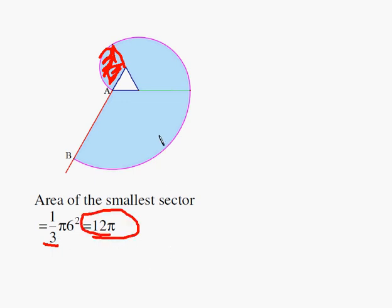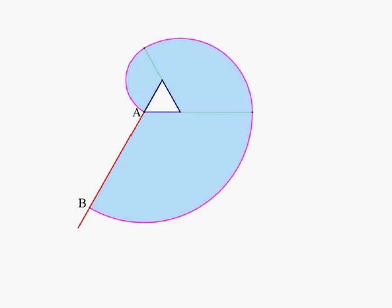So now all we need to do is add the areas of the three sectors. From the previous slides, we can say area of the smallest sector is 12 pi.